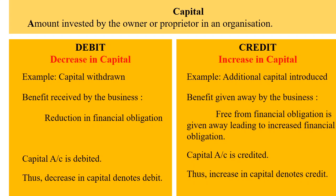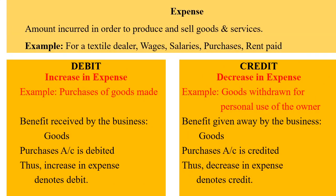Credit denotes increase in capital. Example: additional capital introduced. The benefit given away by the business — freedom from financial obligation is given away leading to increased financial obligation — and so the capital account is credited. Thus, increase in capital denotes credit.